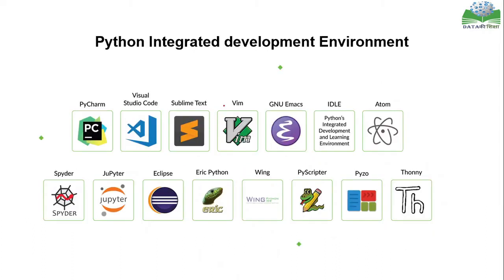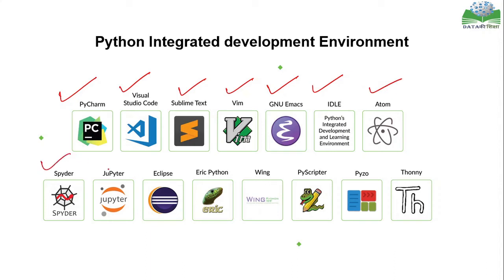For Python integrated development environments, we have PyCharm, Visual Studio Code, Sublime Text, VIM, GNU Emacs, IDLE, Atom, Spyder, and Jupyter Notebook. Most of the time we will be using Jupyter Notebook because it is very easy to understand and execute code line by line. We can also check Python versions in different terminals.